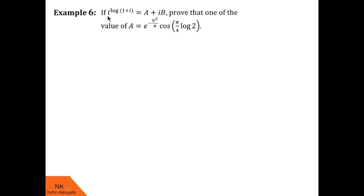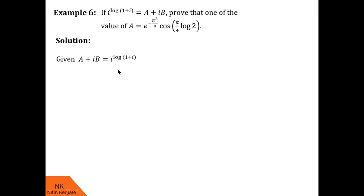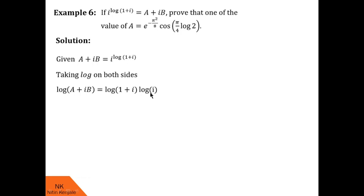Here, given that i raised to log(1+i) is equal to a+ib, we have to prove one value of a is e raised to minus pi squared by 8 into cos(pi/4 into log 2). So let us proceed: a+ib equals i raised to log(1+i). Taking log on both sides, on LHS we get log(a+ib) and on RHS we get log(1+i) into log i, using the log property that log(a^b) = b log a.